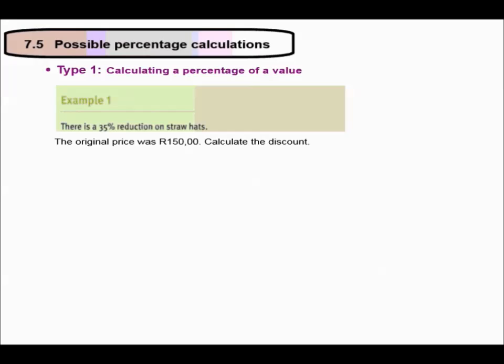Possible percentage calculations. Type 1 is calculating a percentage of a value. Remember the word of means multiply. There is a 35% reduction on straw hats. The original price was 150 rand. Calculate the discount. So we are going to find 35% of 150 rand.